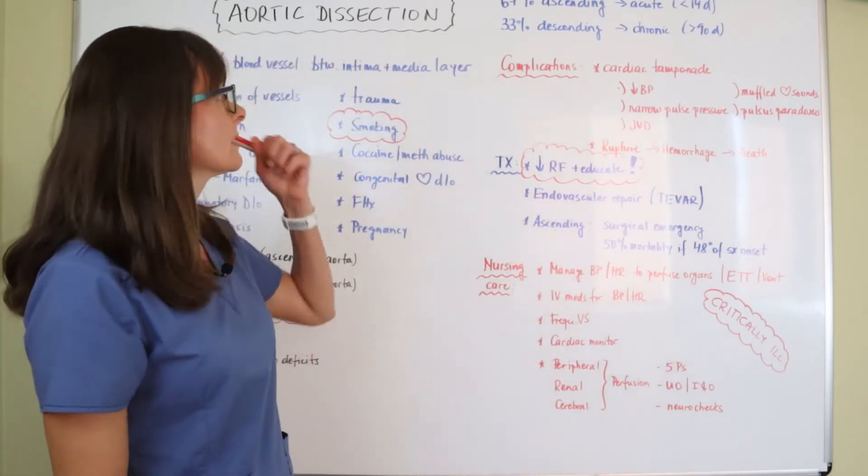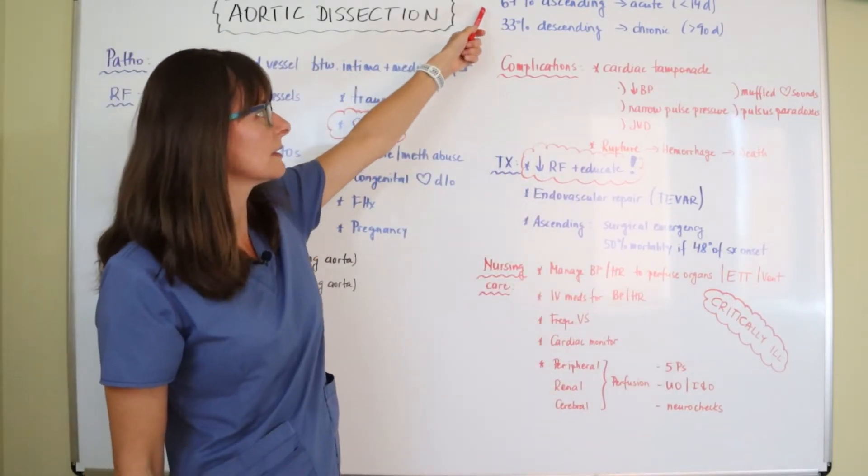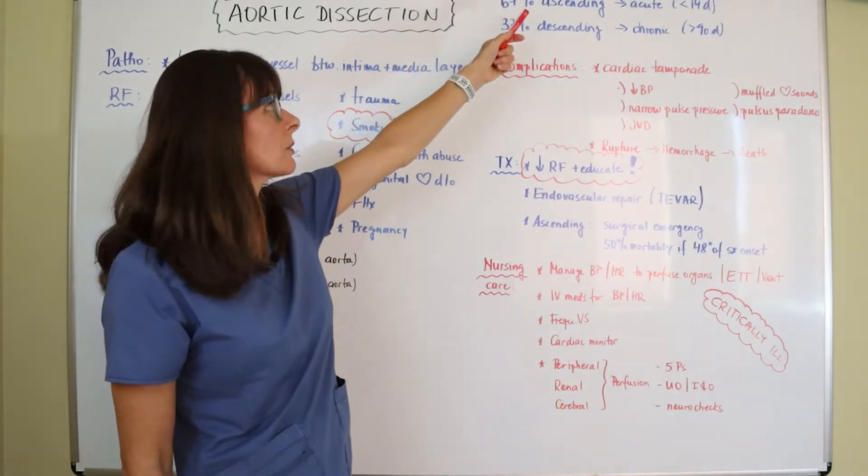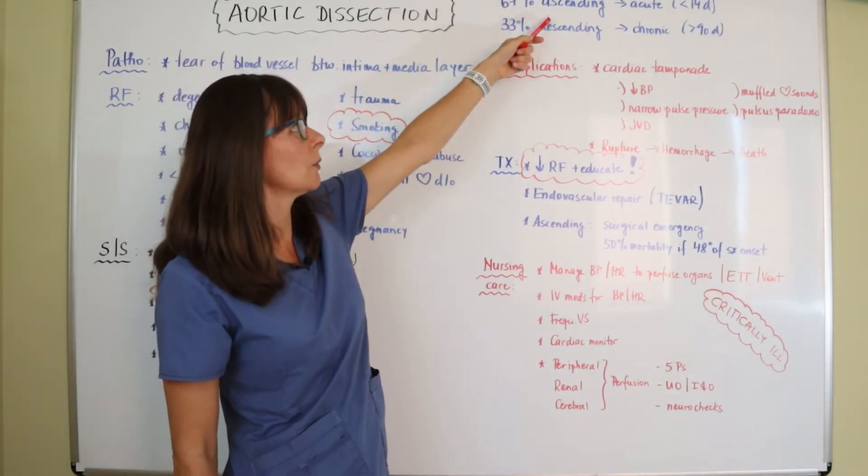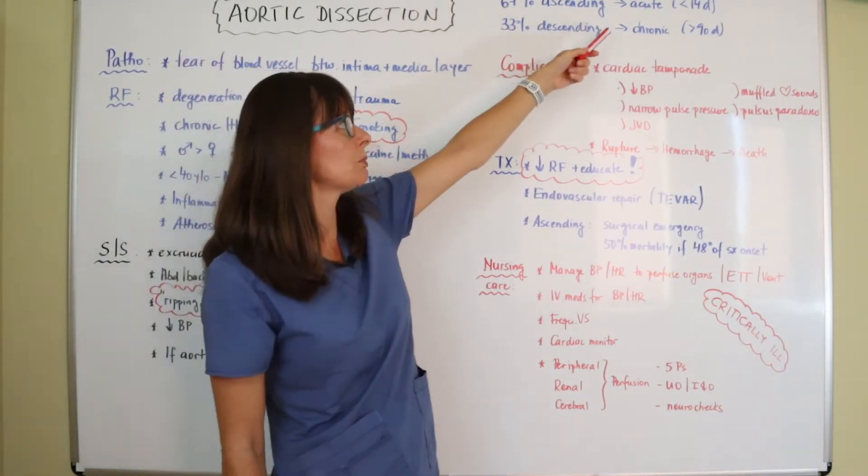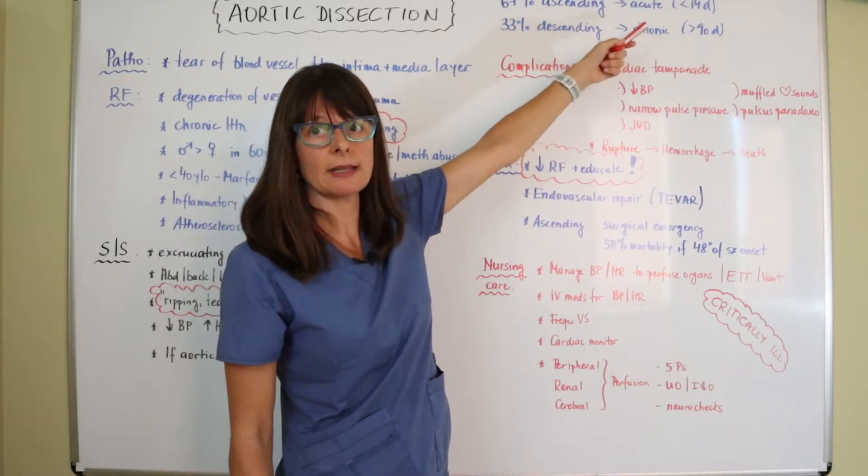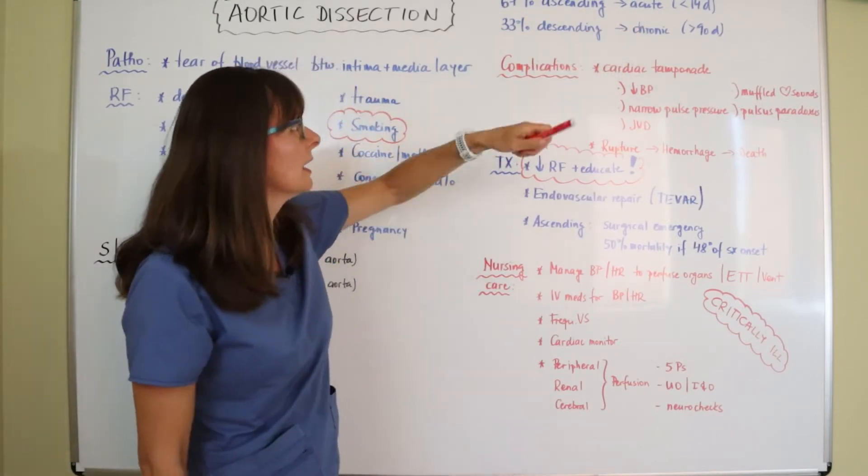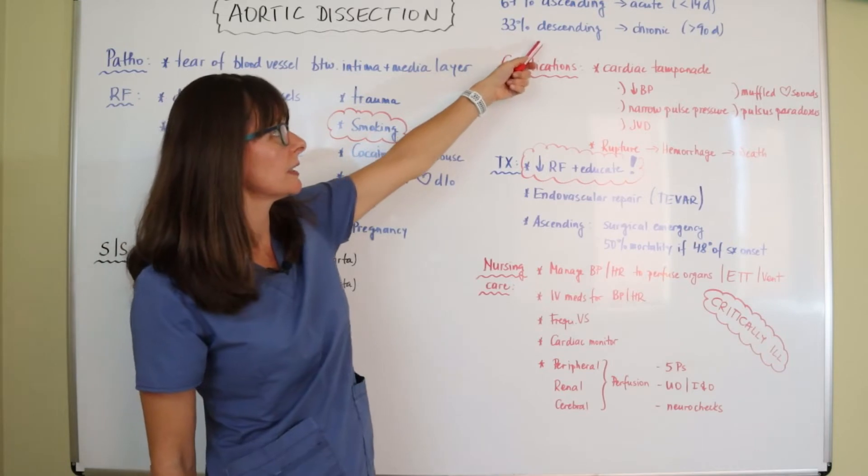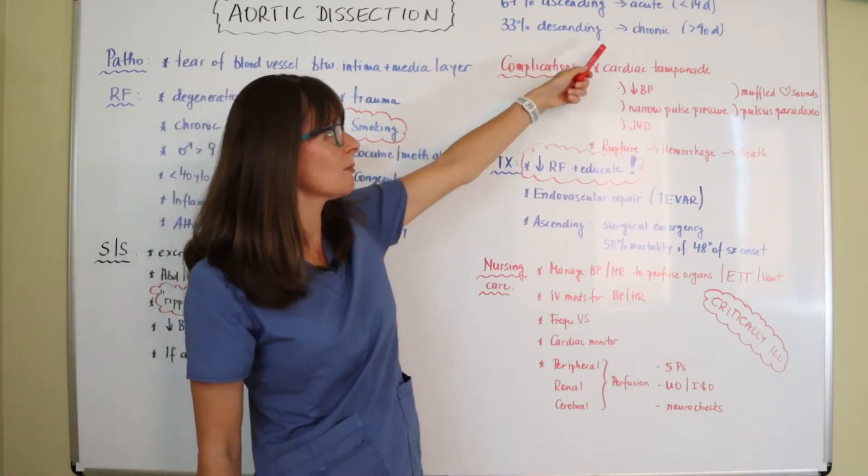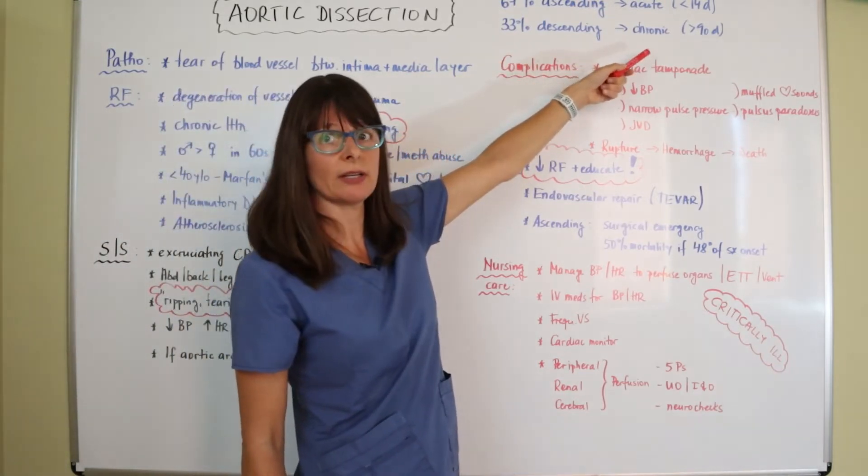67% of aortic dissections occur in the ascending aorta, which makes them acute because symptoms usually last less than 14 days. And 33% are in the descending aorta and they can be chronic, which means greater than 90 days.